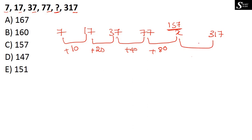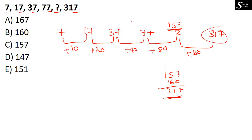Verification: the next difference after 80 is 160. Adding 160 to 157 gives 317, which matches the last given term. So the logic is confirmed and the answer is 157.